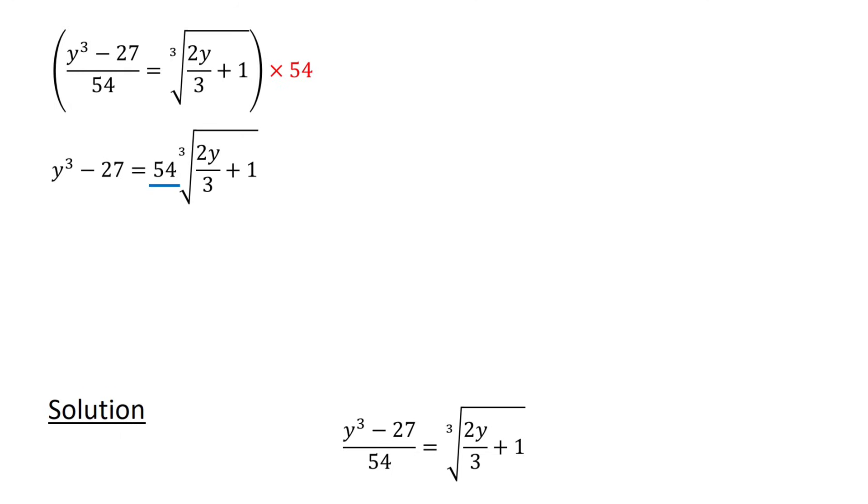Next, we write 54 as 18 times 3, which in turn can be written as 18 times cube root of 27. We then combine these two terms using the identity a to power of n times b to power of n equals ab to power of n to obtain y cubed minus 27 equals 18 times cube root of 27 times 2y over 3 plus 1, or y cubed minus 27 equals 18 times cube root of 18y plus 27.